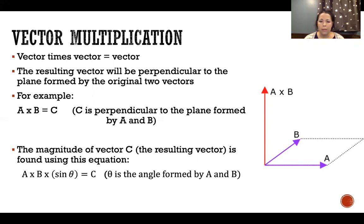In this case, theta is the angle formed between a and b, and that would give us the magnitude of our new vector C that is the result of a times b.